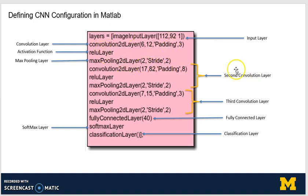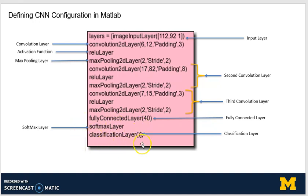The first convolutional layer is followed by a second and a third convolutional layer. Then we have a fully connected layer, which is like a normal neural network. The value 40 here is the number of outputs, or the number of classes to which the image has to be classified. The softmax layer gives the probability corresponding to different classes, and the classification layer gives the label for the image having the highest probability.